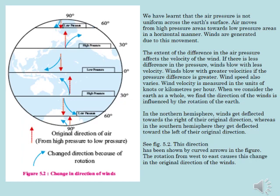When we consider the earth as a whole, we find the direction of the winds is influenced by the rotation of the earth. In the northern hemisphere, winds get deflected towards the right of their original direction, whereas in the southern hemisphere, they get deflected towards the left of their original direction. The rotation from west to east causes this change in the original direction of the winds, as shown by curved arrows in figure 5.2.